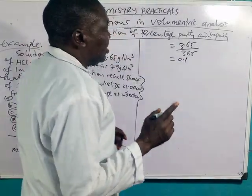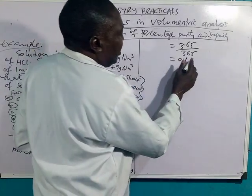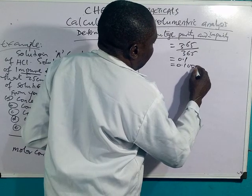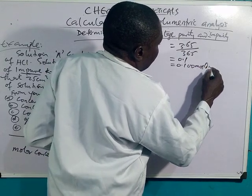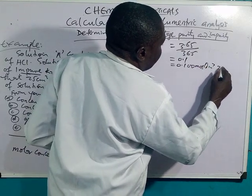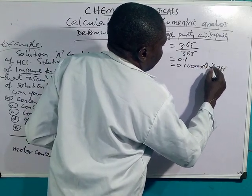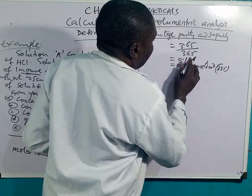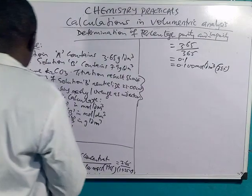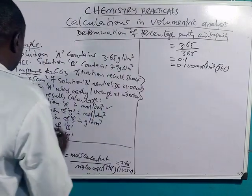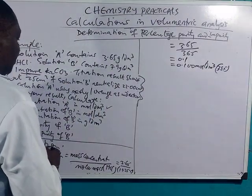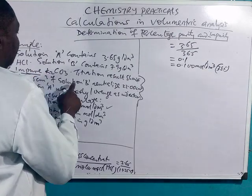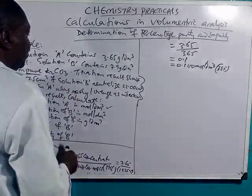3.65 divided by 36.5 gives 0.1. In examination, you cannot write just 0.1 — they will mark it wrong. Instead, you write 0.100 mol/dm³ to the required significant figures. That is the answer for question A. Now for B: concentration of B in mol/dm³. Remember, B is impure, therefore you must not use its mass concentration directly.